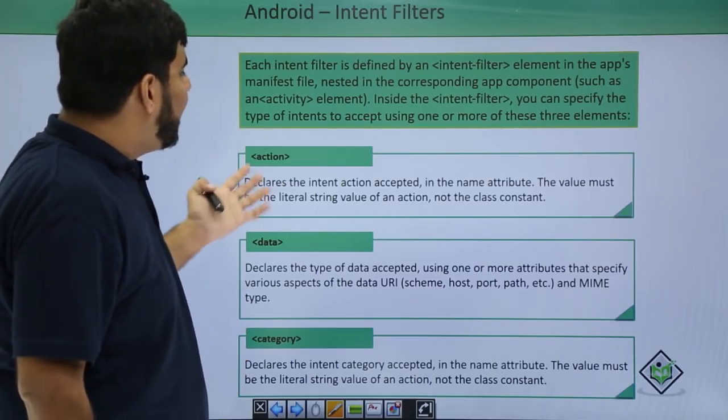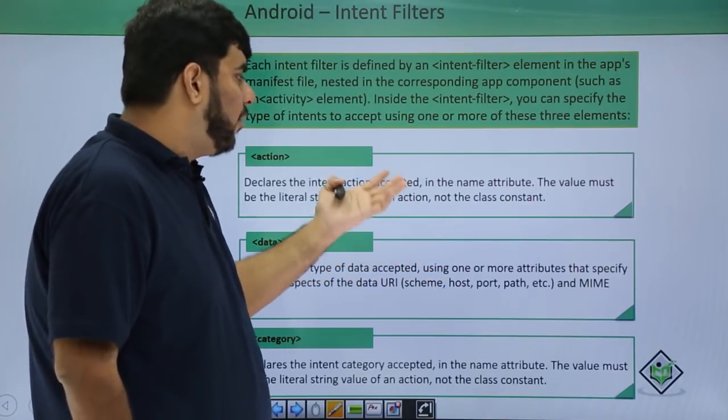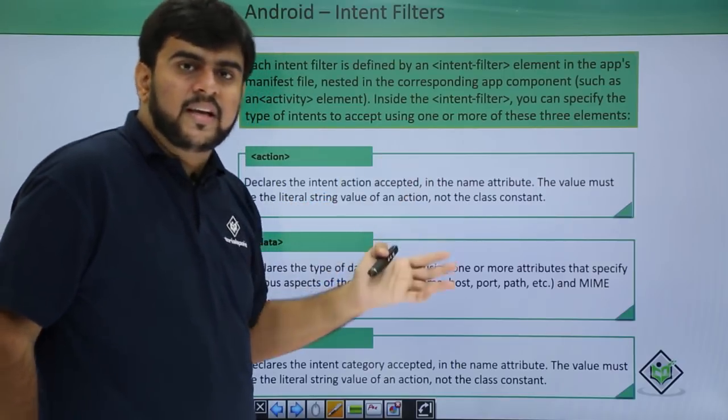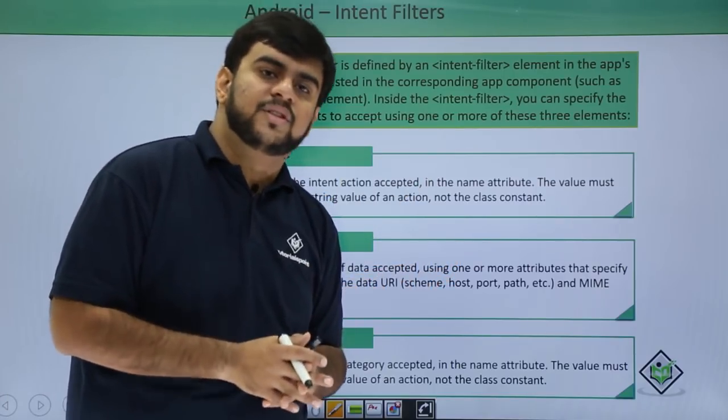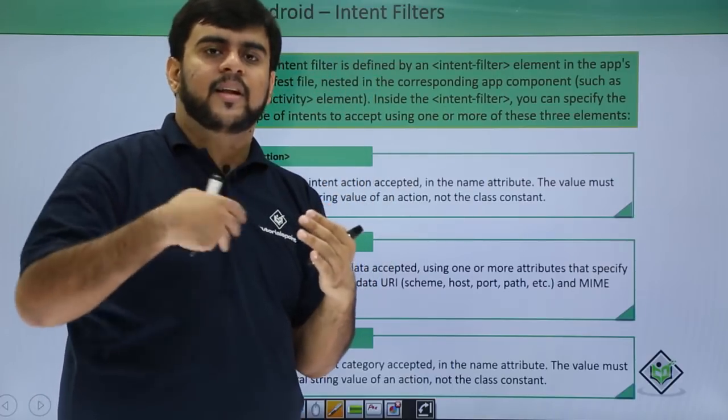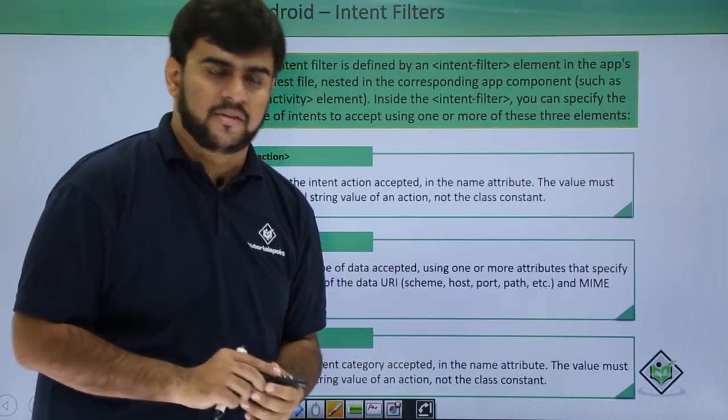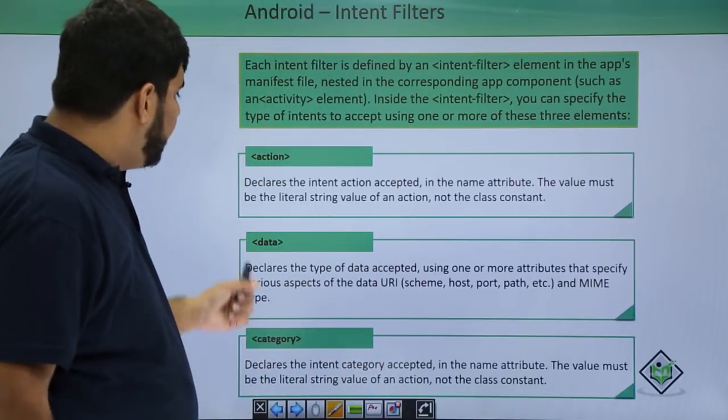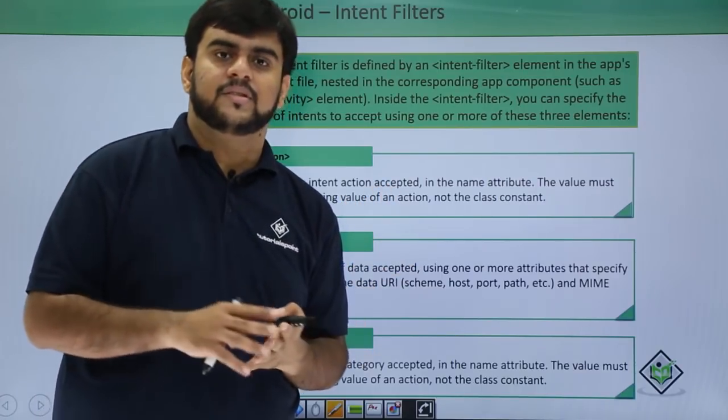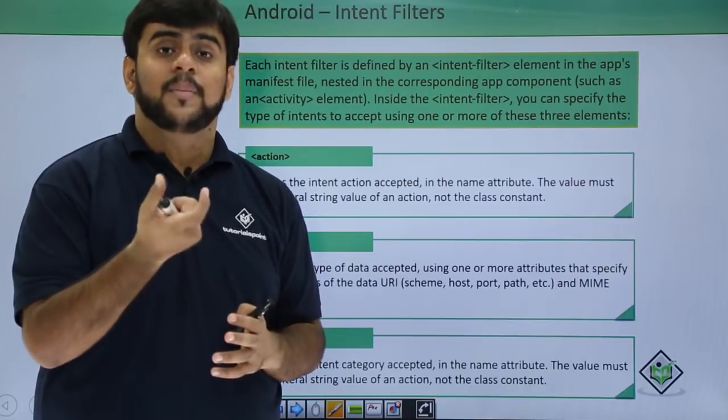Action declares the action that the application is accepting. It's a normal string value. We can have two or three actions but we are advised to add a new action tag every time we are adding a new value to our action. Then is the data, which specifies what data is accepted, like if it's a mail then we use the mailto data or the mailto URI.